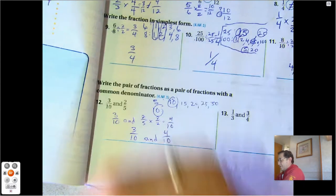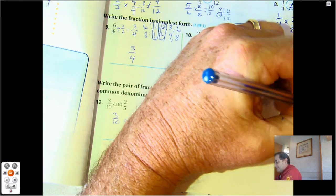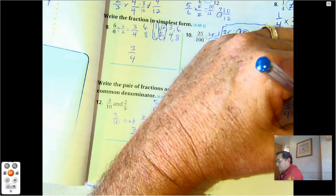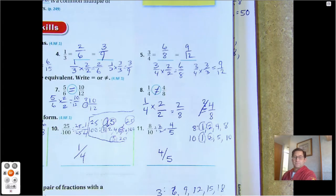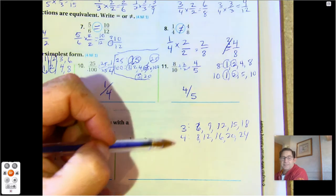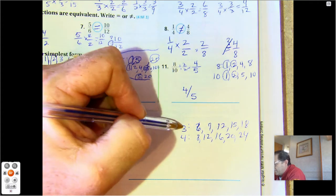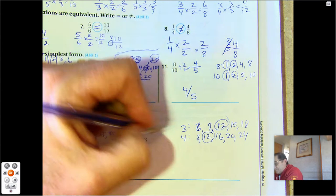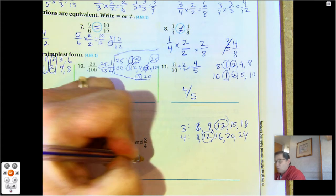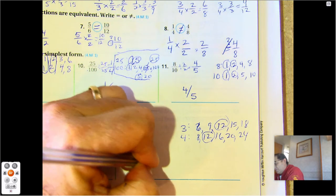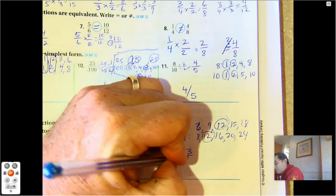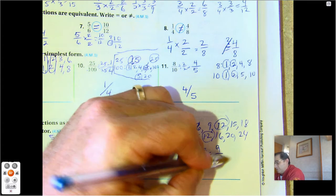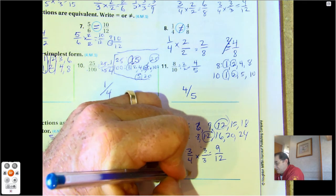Number 13: 1/3 and 3/4. Multiples of 3: 3, 6, 9, 12, 15, 18. Multiples of 4: 4, 8, 12, 16, 20, 24. Twelve is in common. For 1/3, multiply by 4/4: 4 times 3 is 12, 4 times 1 is 4, giving 4/12. For 3/4, multiply by 3/3: 3 times 4 is 12, 3 times 3 is 9, giving 9/12. So the common denominator fraction pair is 4/12 and 9/12.